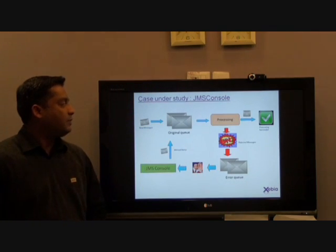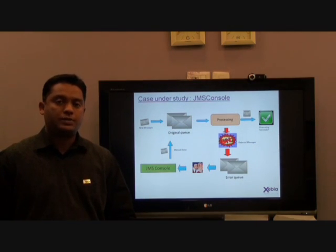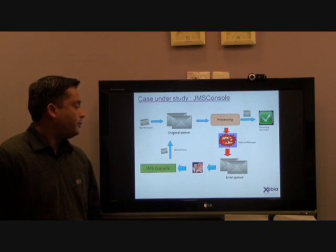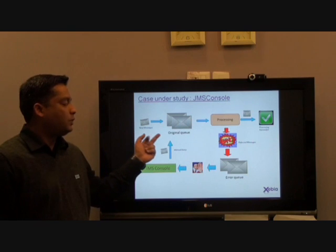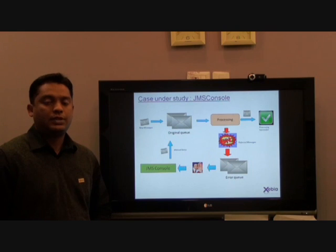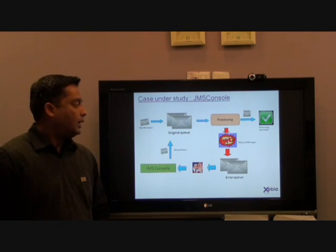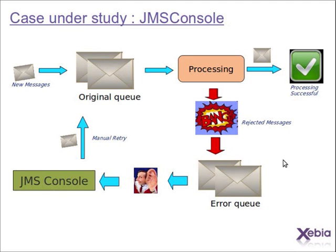The application that we migrated is called JMS Console. In a normal JMS application scenario, you have a message coming in which is put onto a queue, and thereafter it is picked up by whatever the consumer is configured for that queue. In our case, if the consumer is down or the network is down, the message is moved onto an error queue — and this is where JMS Console kicks in. It listens onto the error queue and reads the messages from there.